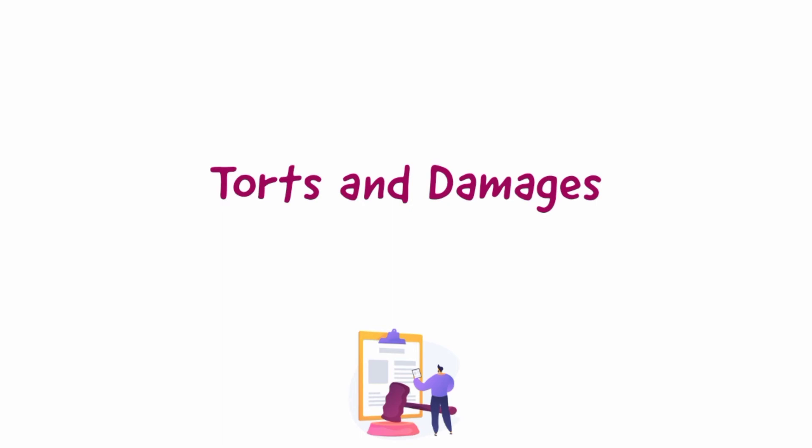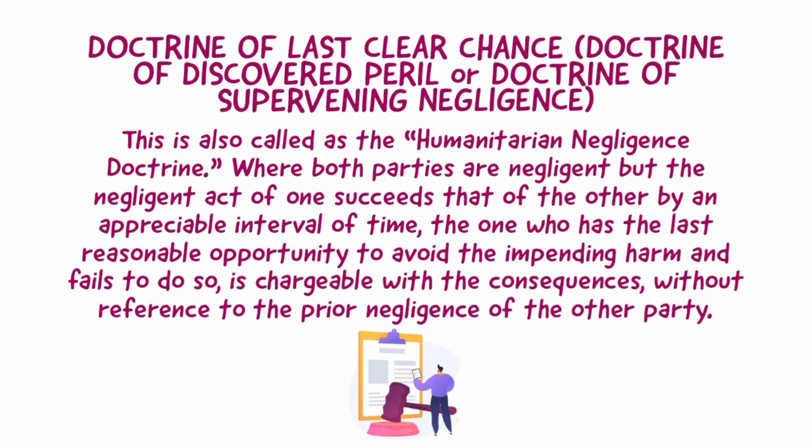Torts and Damages. Doctrine of last clear chance — also called the doctrine of discovered peril, doctrine of supervening negligence, or the humanitarian negligence doctrine. Where both parties are negligent but the negligent act of one succeeds that of the other by an appreciable interval of time, the one who has the last reasonable opportunity to avoid the impending harm and fails to do so is chargeable with the consequences, without reference to the prior negligence of the other party.